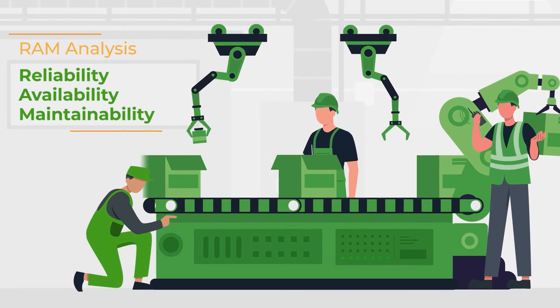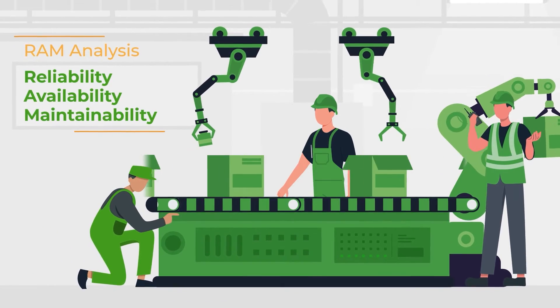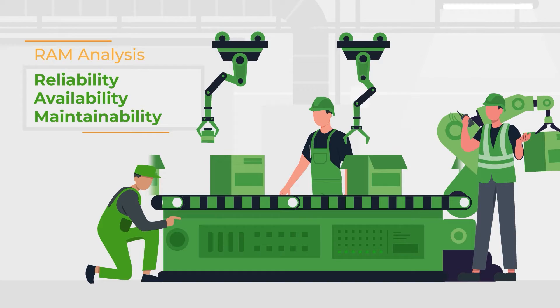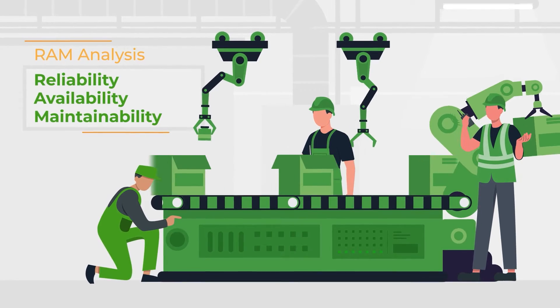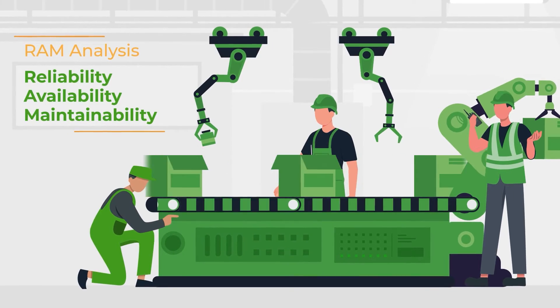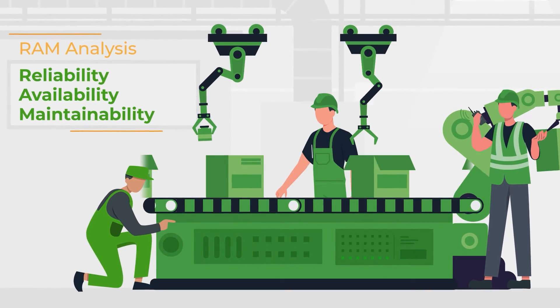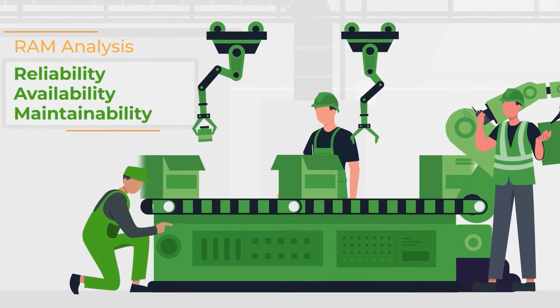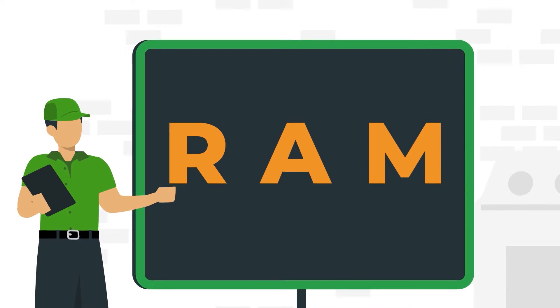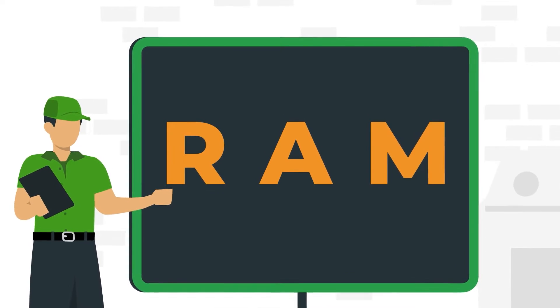Combining reliability, availability, and maintainability, RAM analysis uses a number of metrics to assess the performance of assets and systems. Let's look at the R, A, and M that go into RAM analysis.